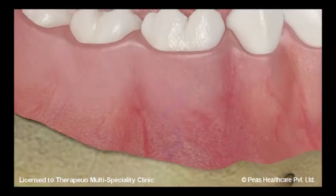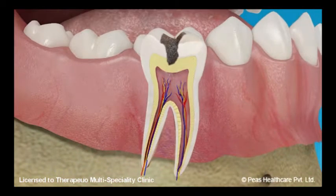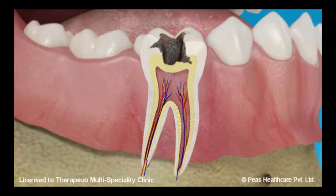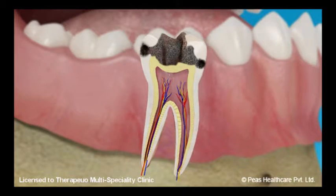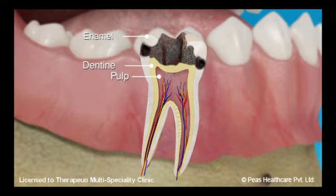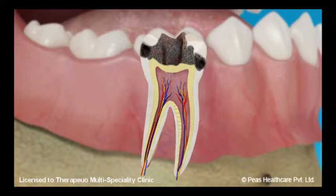If left untreated, the caries lesion will expand and grow deeper and wider. At times, it reaches the front and back sides of a molar. The decay also moves closer to the pulp of the tooth. Once the enamel is destroyed, the progress of further destruction in the dentine is more rapid. This is an advanced level of tooth destruction, but it still can be treated and the decay process stopped.